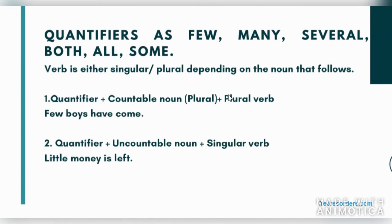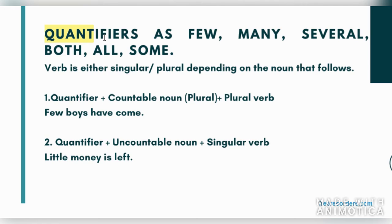The second part is about indefinite pronouns with some quantifiers — words that indicate quantity — like few, many, several, both, all, some. This is a little tricky because it is not a hard and fast rule; they can be singular or plural. If you have a quantifier, you will see if the noun is countable — meaning we can count it, like 1 boy, 2 boys, 3 boys. Countable nouns take a plural verb. For example, 'Few boys have come.'